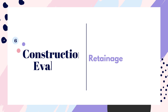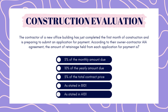Next up is construction evaluation. The contractor of a new office building has just completed the first month of construction and is preparing to submit an application for payment. According to their owner-contractor AIA agreement, the amount of retainage held from each application for payment is: 5% of the monthly amount due, 10% of the yearly amount due, 5% of the total contract price, as stated in B101, or as stated in A101. Pause here to answer.